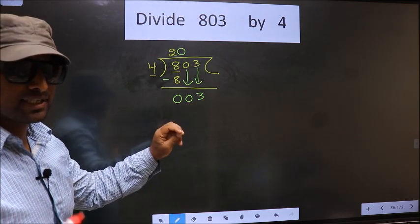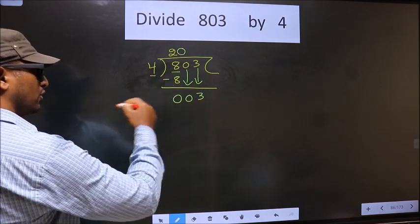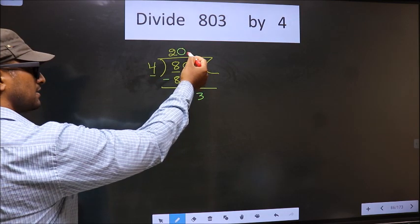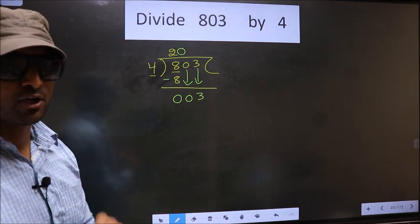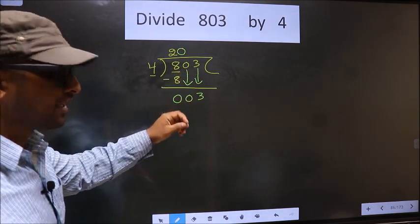Now mistake happens here. What is that mistake? Here we have 3, and here 4. 3 is smaller than 4, so what many do is they put a dot and take 0 here, which is wrong. Just now you brought the number down, and in the same step you want to put a dot and take 0, which is wrong.